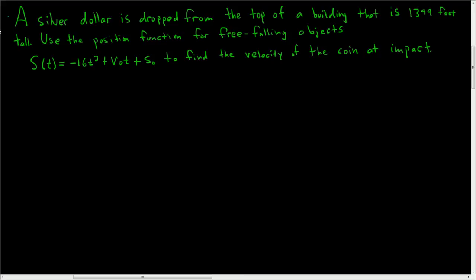A silver dollar is dropped from the top of a building that is 1,399 feet tall. We want to use the position function given to find the velocity of the coin at impact. Let's go ahead and work it out.